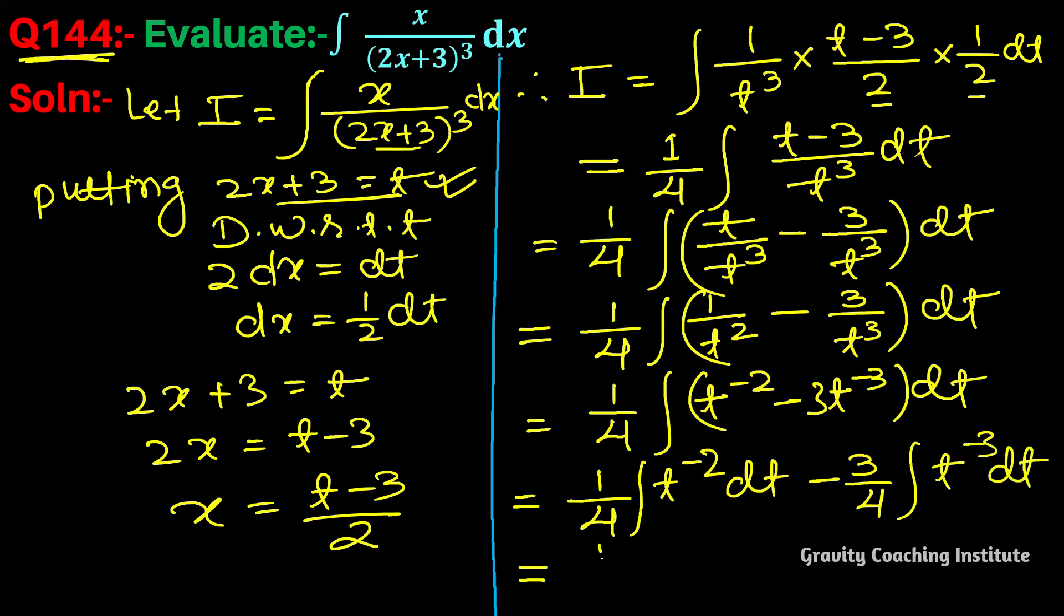This equals (1/4) times the integration: t^(-1)/(-1) and t^(-2)/(-2) plus C, which simplifies with the negatives canceling.